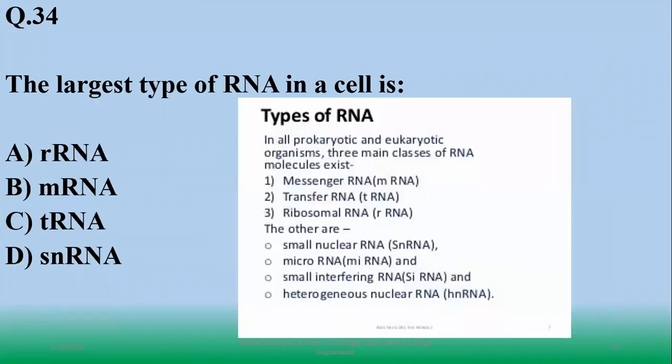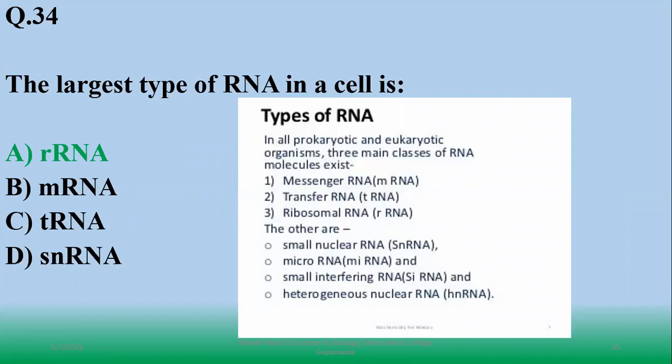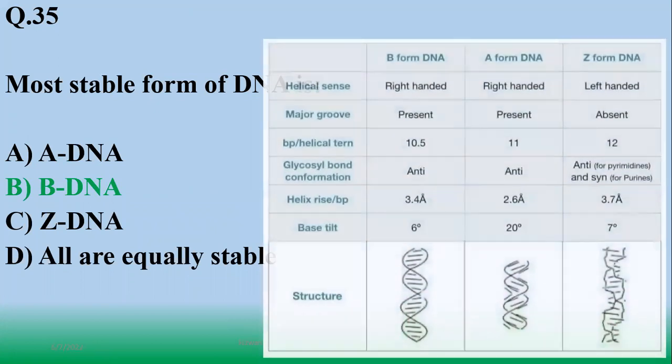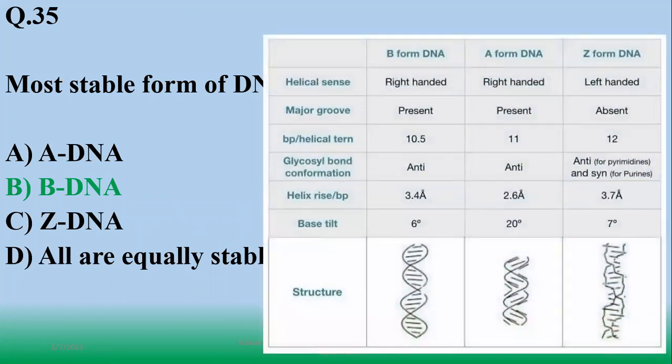Number 34: the largest type of RNA cell is ribosomal RNA. There are some other types of RNA as well, but largest is ribosomal. Number 35: the major form of DNA out of all three major forms - B form is the normal form of DNA.